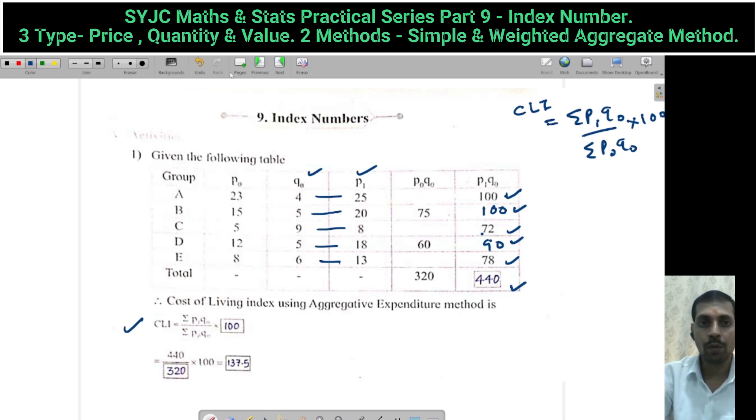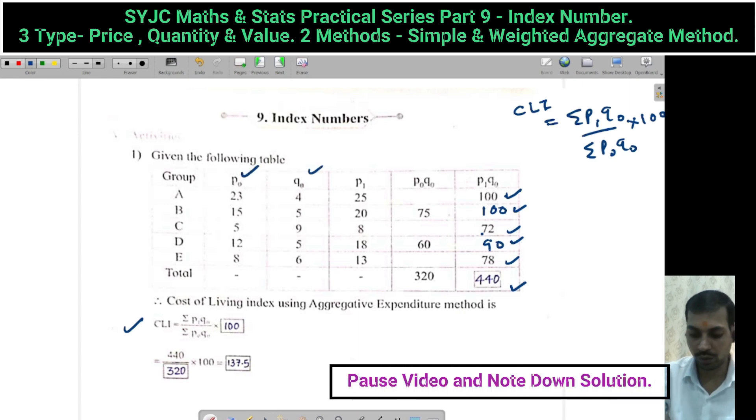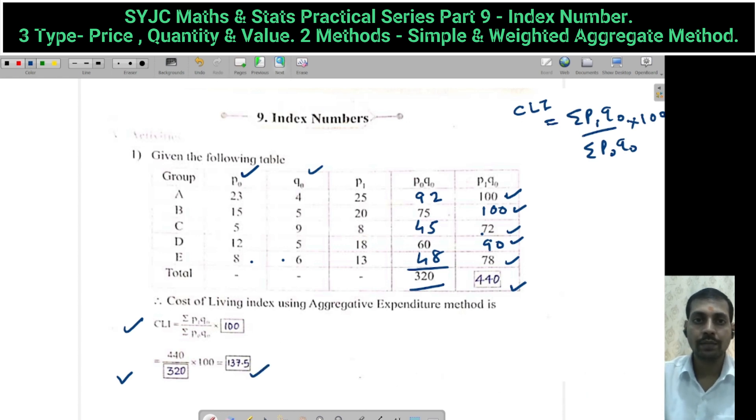Similarly, calculate P0Q0. 23 times 4 is 92, 15 is 75, 9 times 5 is 45, 12 is 60, 8 times 6 is 48. Total already given is 320. Just substitute: 440 divided by 320 into 100, you will get 137.5.